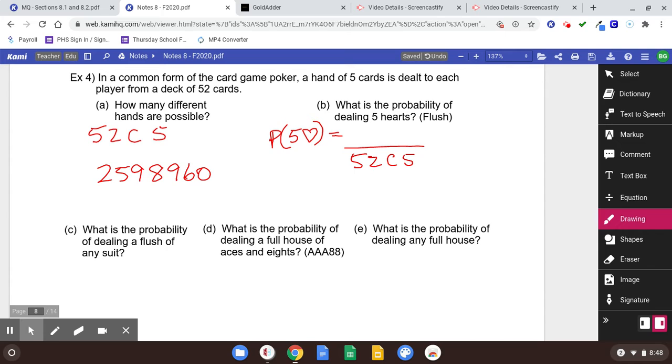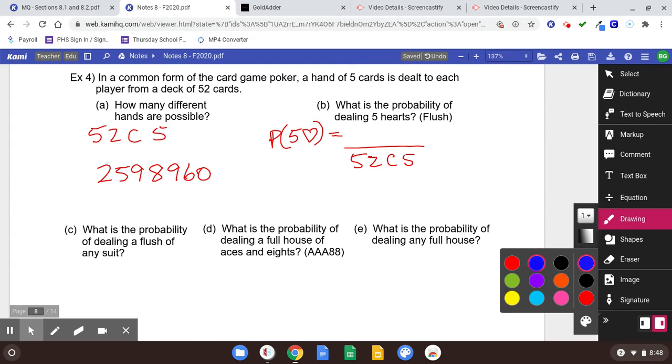Probability of five hearts. The total is going to be 52 choose 5. We already know that. That's the total number of ways of dealing five cards. But the part, we want five hearts. So think about five hearts out of how many hearts? 13. So five hearts out of 13 hearts is going to be 13 choose 5.